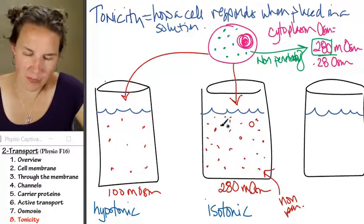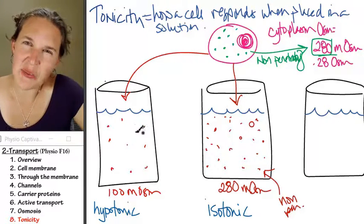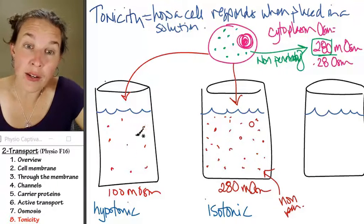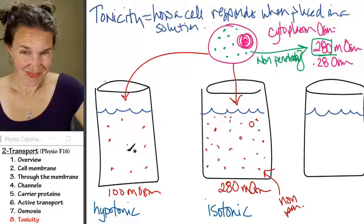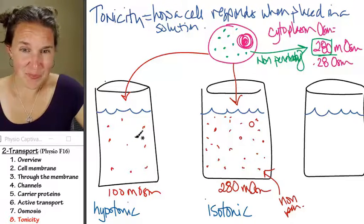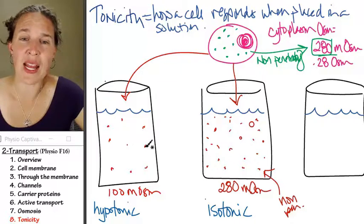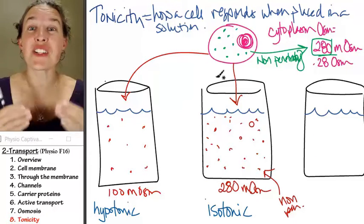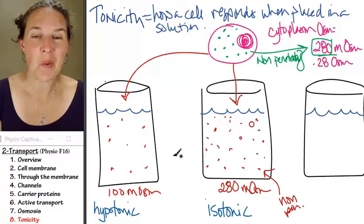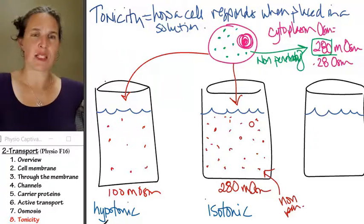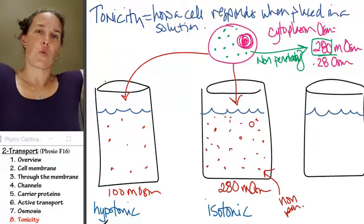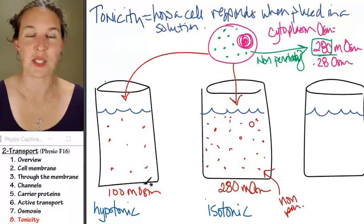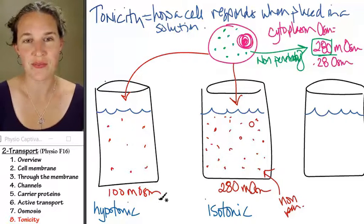If the concentration here is 100 milliosmoles, it's a lower concentration. And the water, particles can't move, they're still nonpenetrating. The water is going to have to go into the cell if we want to try and equalize concentrations. If we want to reach osmotic equilibrium, water is going to go into the cell. If water goes into the cell, what's the cell going to do? Swell.